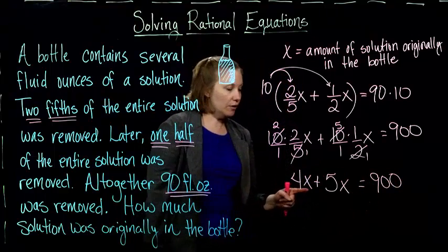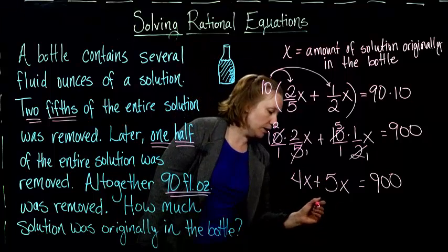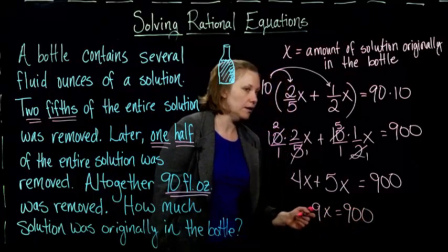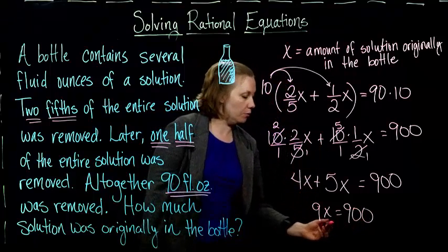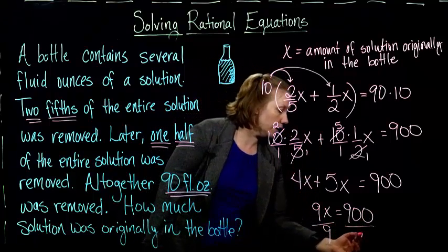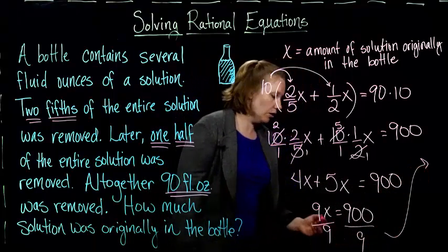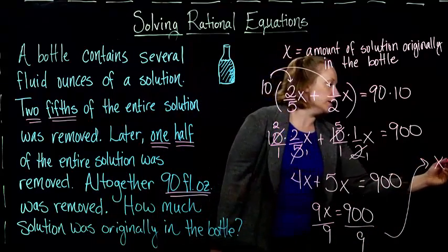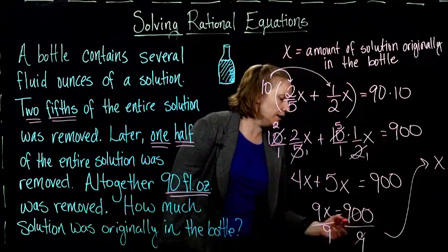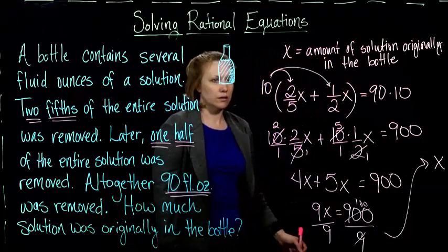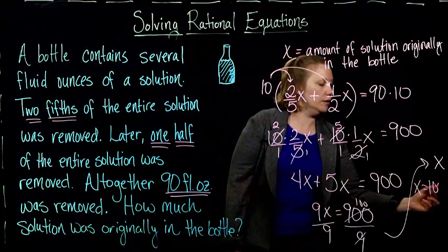We're almost done. Add the 4X and the 5X, which gives me 9X. Then my last step will be to divide by 9 on both sides so I can get the X by itself. I end up with X equals, and when I reduce this, I get 100. X equals 100.